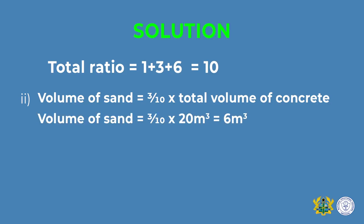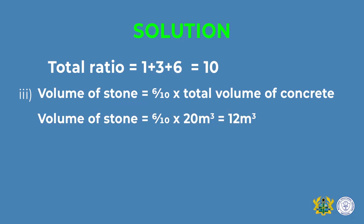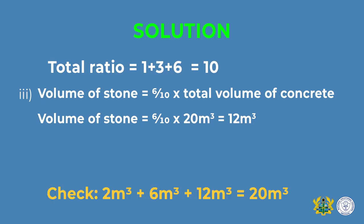Six cubic meters of sand is also part of the total volume of concrete given. Volume of stone: the ratio for stone is 6, so divide 6 by 10 and multiply by 20 m³, giving 12 cubic meters. To verify: add 2 + 6 + 12 = 20, which is exactly the same as the total volume of concrete produced. That is the solution for example one.